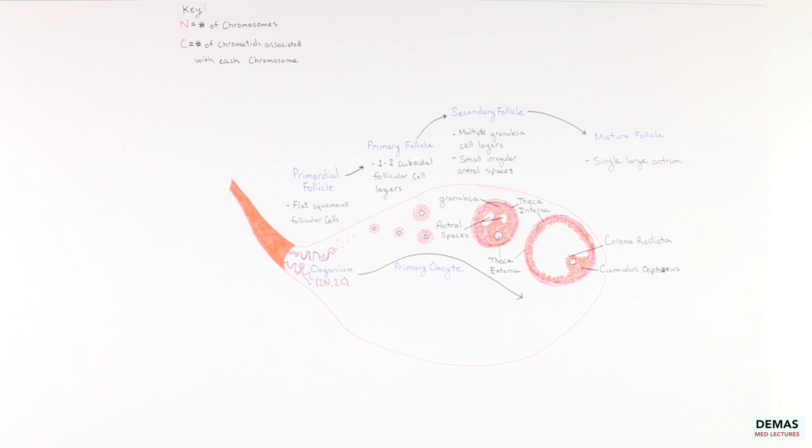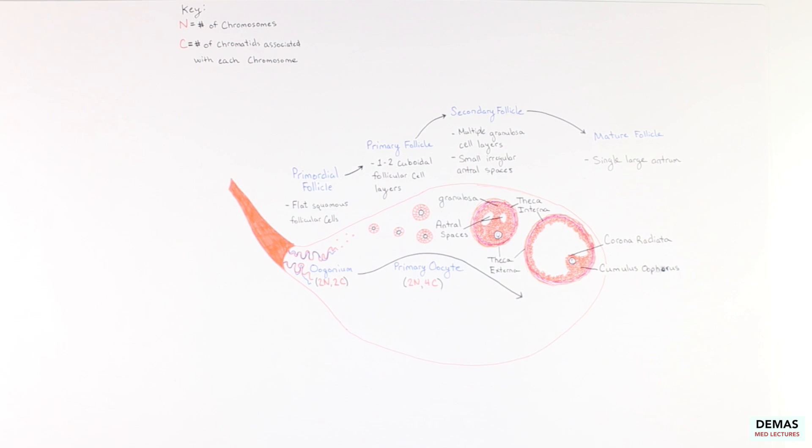The primary oocyte contains two sets of chromosomes and replicated sister chromatids, meaning its chromosome number is two and its chromatid number is four. During this phase, the primary oocyte enters the first stage of gamete formation, meiosis I. However, it doesn't finish since the immature oocyte becomes arrested in prophase I, where it remains diploid.